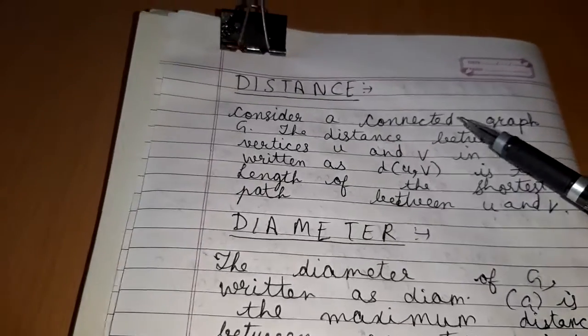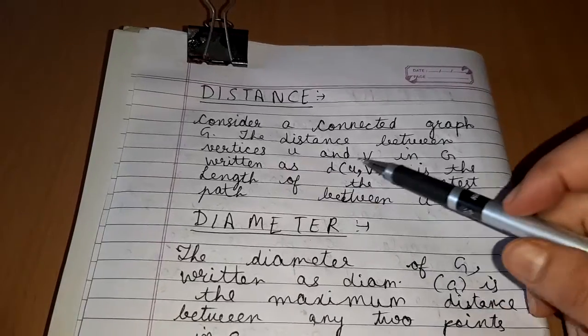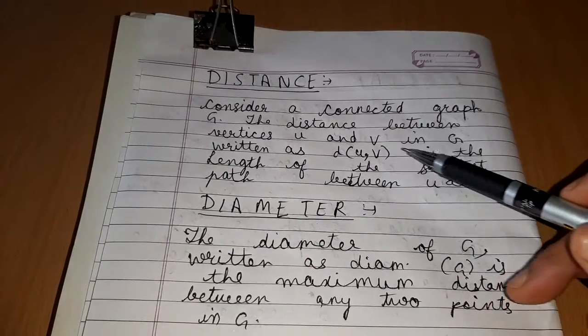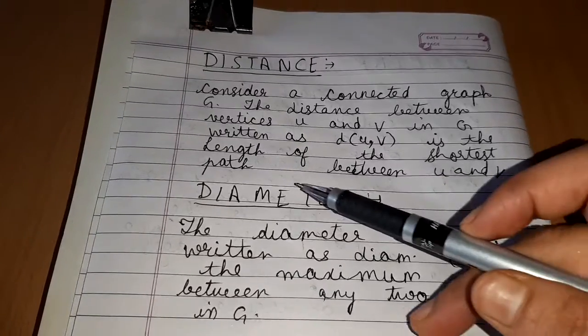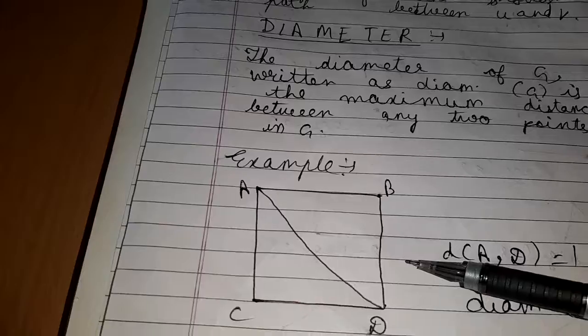Next is distance. Consider a connected graph G. The distance between vertices U and V in G, written as D(U,V), is the length of the shortest path between U and V.